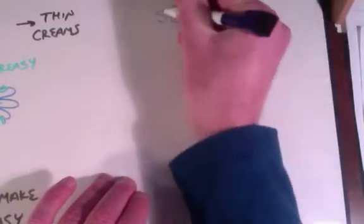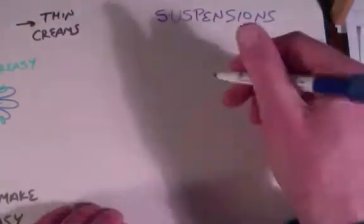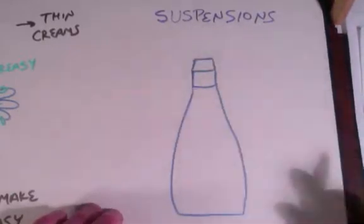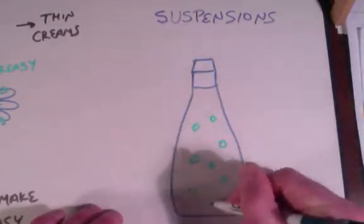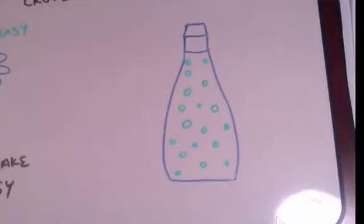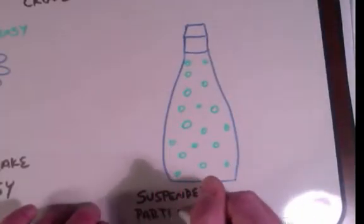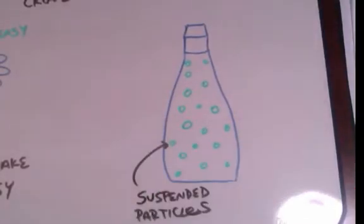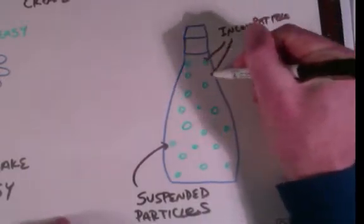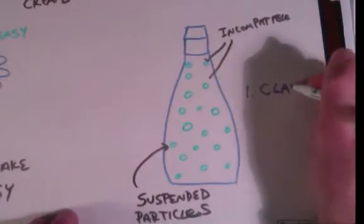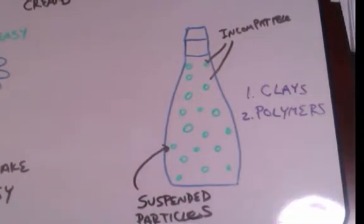The next type of formulation is a suspension. Suspensions are another form of delivering incompatible ingredients. Unlike creams, they are typically clear products with visible particles — like gelatin beads or inorganic minerals, for example titanium dioxide — suspended throughout. They're used for sunscreens, handwashes, or shampoos. To create suspensions, you need to include a polymer or clay that gives the formula some internal suspending structures. Ingredients like carbomer or bentonite clays are useful.